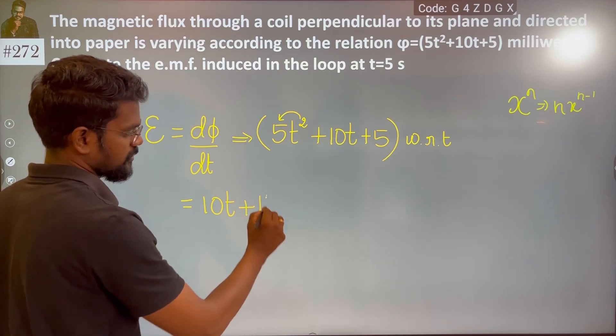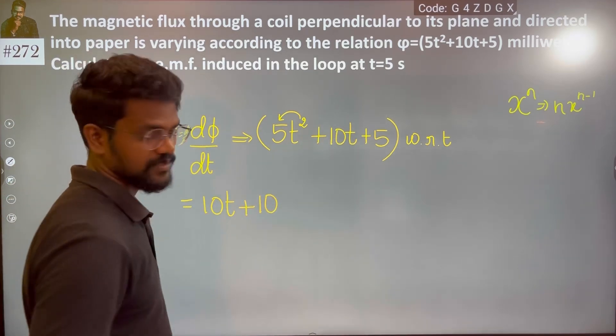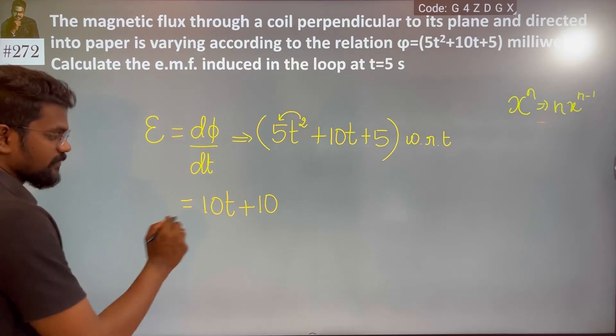Plus 1 times 10t to the power 0, which is 1. Then this is constant, so this is going to be zero.